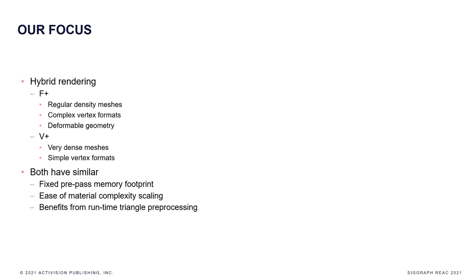After all this pre-production research, we decided to focus on hybrid rendering involving F-plus and V-plus designs. We would use F-plus for regular density meshes, complex vertex formats, and deformable geometry, while V-plus would be used for dense meshes and simple vertex formats. Our decision comes from the fact that both techniques share several commonalities: fixed pre-pass memory footprint, ease of material complexity scaling, and both benefit from runtime triangle preprocessing.